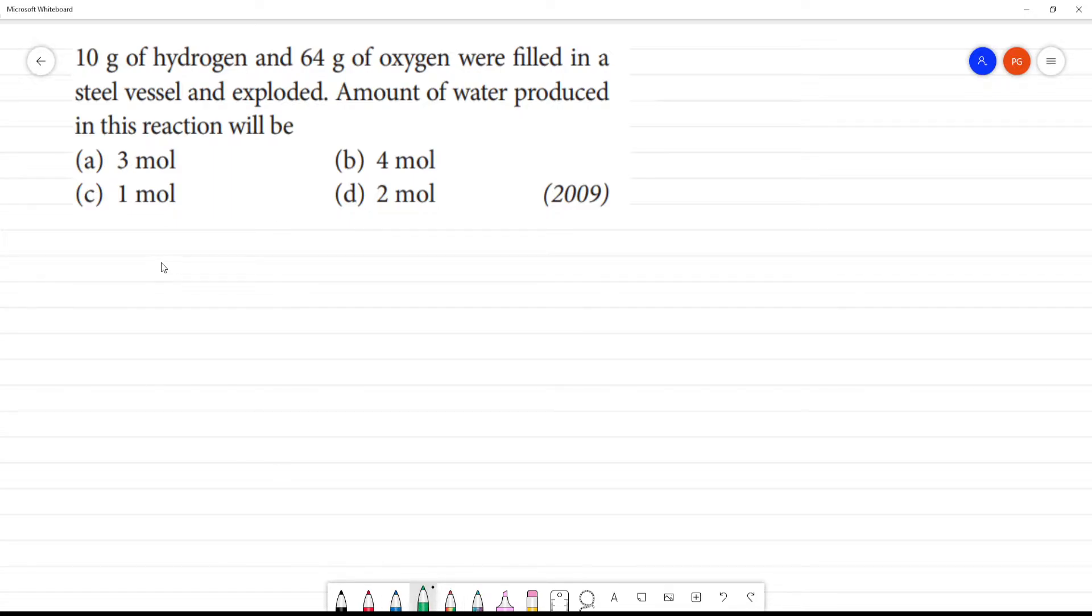What do we need to do? Hydrogen and oxygen gives water. This is gas and this is gas. Amount of water produced in this reaction. What do we need to do? First step is writing the equation.